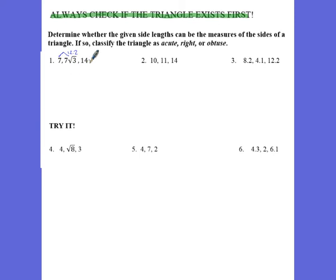So I can proceed with Pythagorean theorem. So 14 is my biggest side. That's my c squared. So I'm going to say 14 squared, and I'm going to put a question mark there for now. And we're going to check, is 14 squared equal to, less than, or greater than 7 squared plus 7 square root of 3 squared?